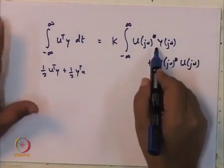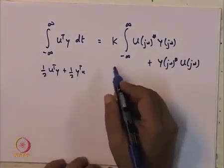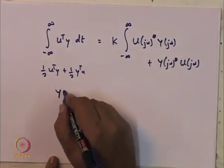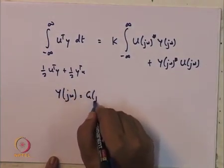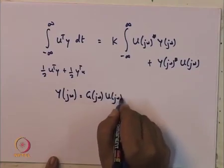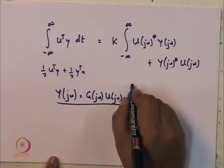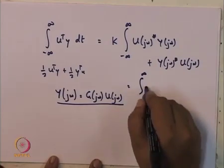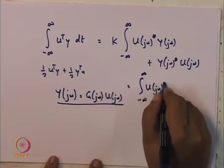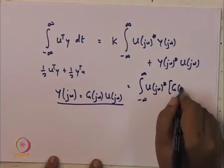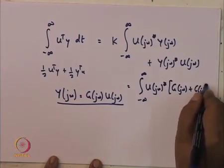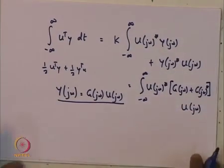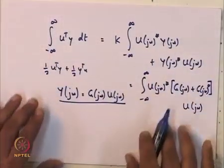The mistake last time was that I had put G(jω) in between incorrectly. Now I can bring in G(jω) by substituting: once we have taken the transforms, y(jω) is really G(jω) times u(jω). Substituting this in, we end up with the integral from minus infinity to plus infinity of u(jω)* multiplying G(jω) plus G(jω)* multiplying u(jω), ignoring the proportionality constant.